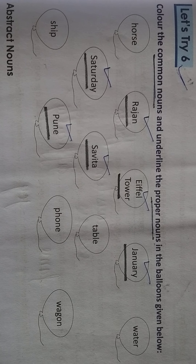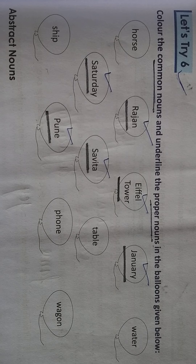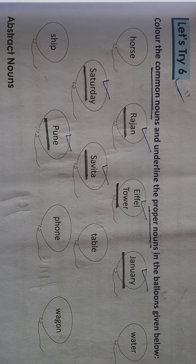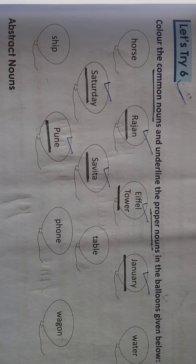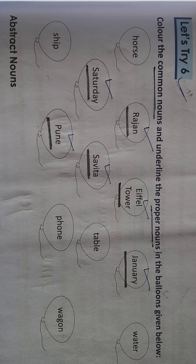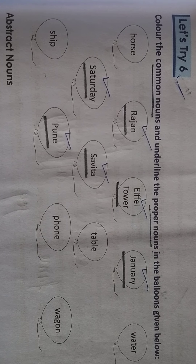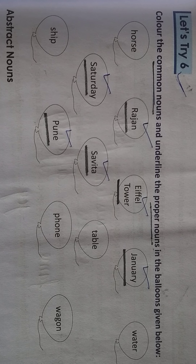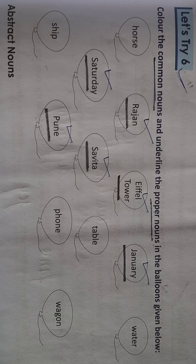Common nouns are the names of people, places, things and animals. They are the names of common people, places, things and also animals.